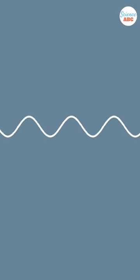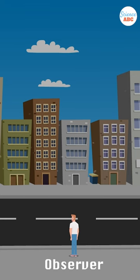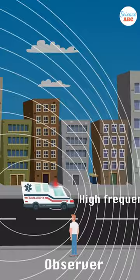As a result, there is an increase in the frequency of the sound. That's why an ambulance or police siren sounds different when it approaches you as opposed to when it moves away from you.